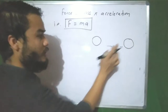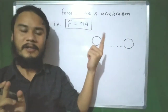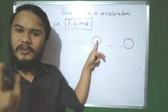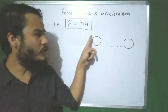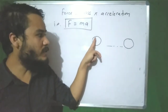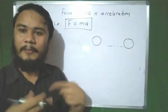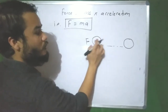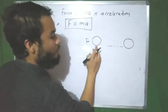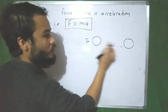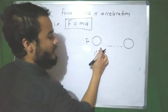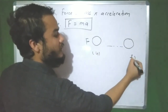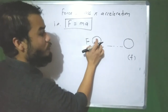Newton's first statement: everybody tends to remain at their original position, either at rest or in motion, unless an external force is applied on it. We have to apply an external force — let that force be F. This object is moving from rest to motion, from this position to this position. Suppose this is the initial position and this is the final position, denoted as U and F respectively.